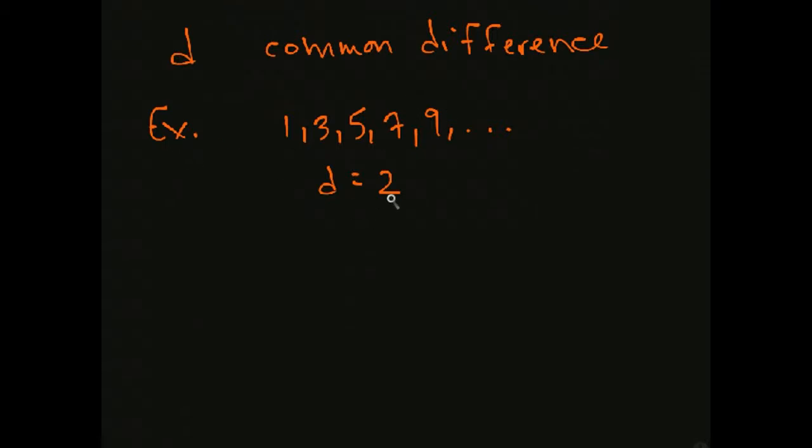Now this could be positive, d could be positive, d could be negative, it could be a fraction, it could be a decimal, it could be anything. But it has to be constant throughout the whole thing.